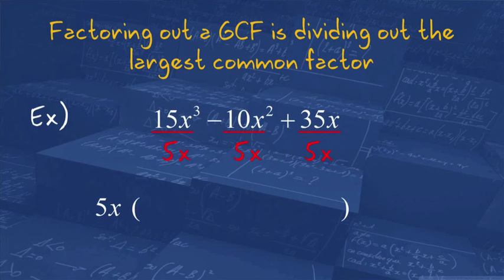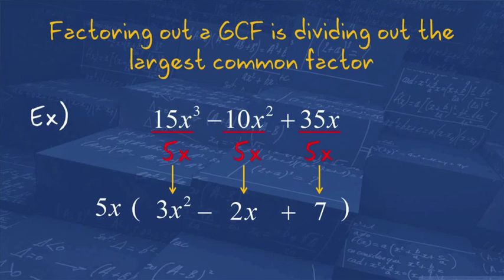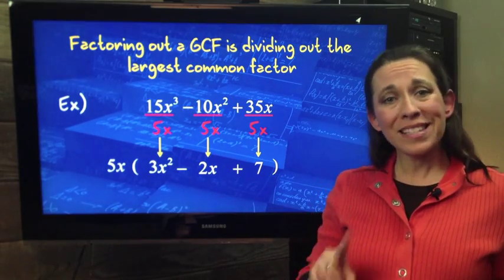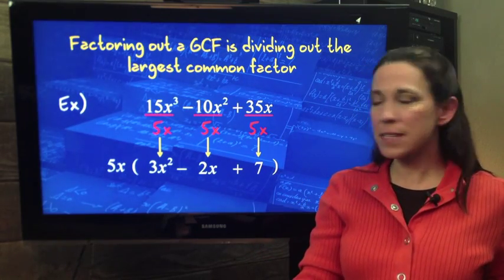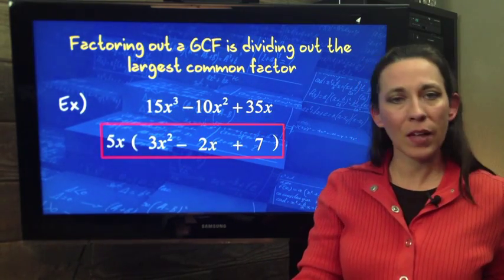So the 5X is still our GCF on the outside, and now we're going to factor it out by division. If we look at the first term, 15X cubed divided by 5X, that would give us 3X squared. The second term here, negative 10X squared divided by 5X would give us a negative 2X. And then lastly, 35X divided by 5X would give us a plus 7. So we end up with the same answer.